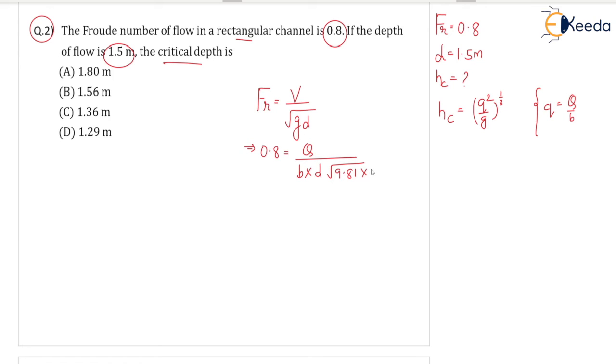D is 1.5. This D value is given, so out of this equation if you calculate Q by B, Q by B is coming equal to 4.6032, and that is discharge by width, that is small q.